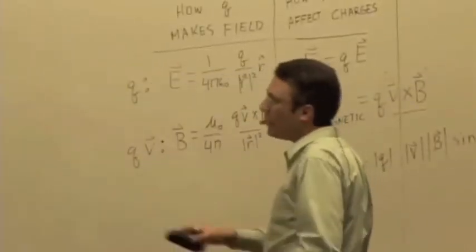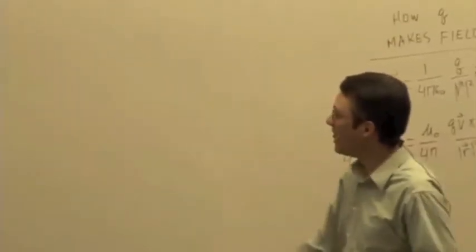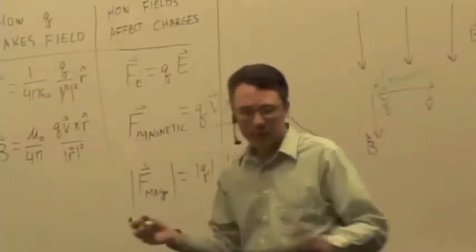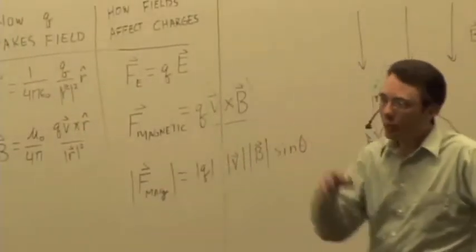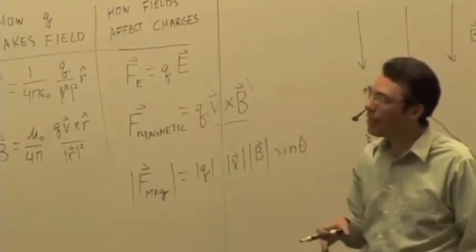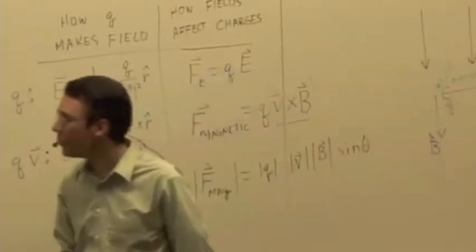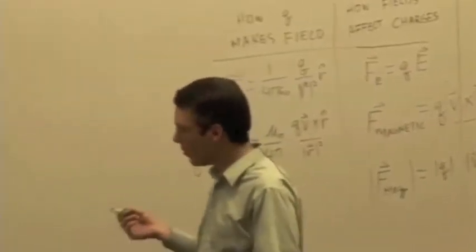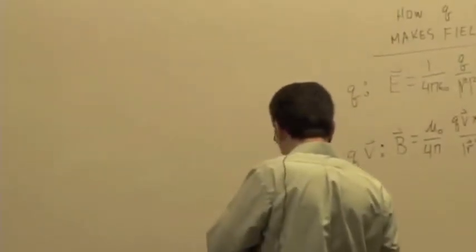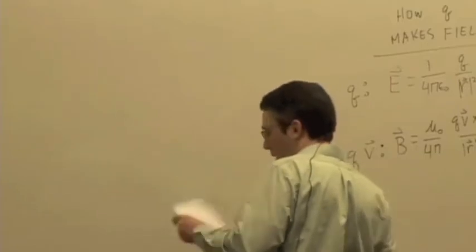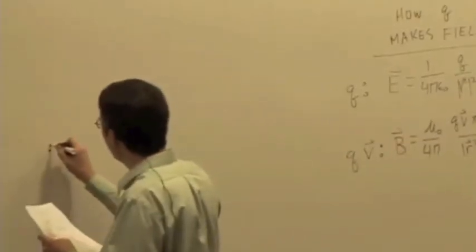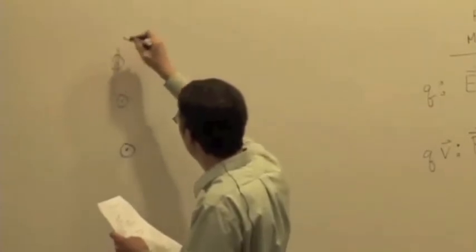Let's say we have a uniform magnetic field. We can produce a uniform magnetic field a number of different ways. If you have a large coil, then at least somewhere within the interior of that coil, you can approximate the magnetic field as being uniform, or a solenoid — a coil of wire with a current running through it. So we can produce a magnetic field somehow, pointing out of the board here.